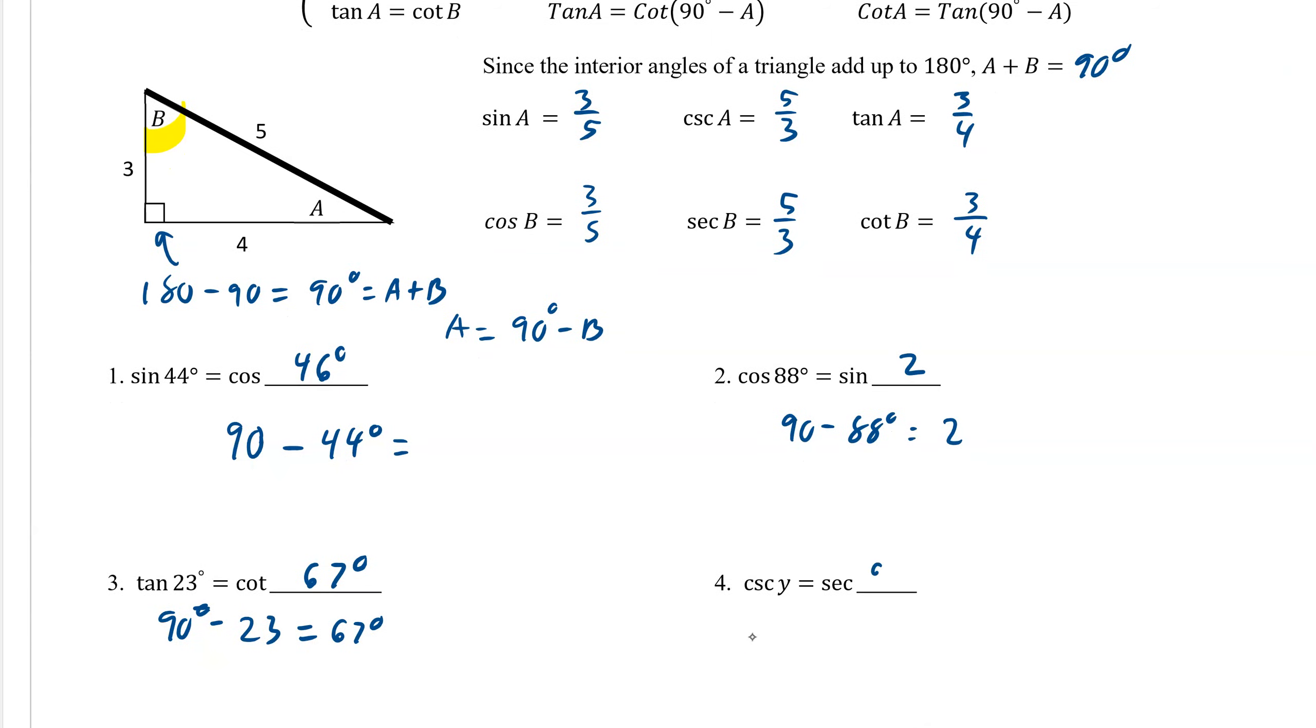And even if they use a variable, this one's much quicker. It's just 90 minus y. So again, make sure they are cofunctions.